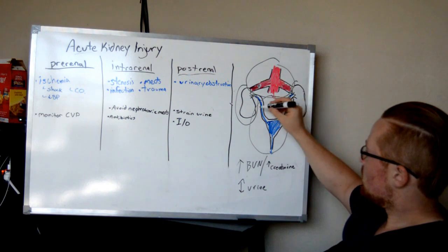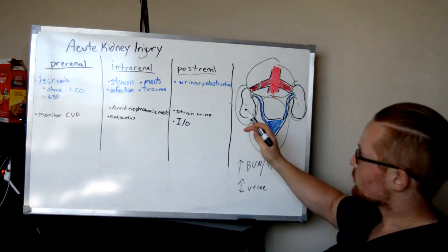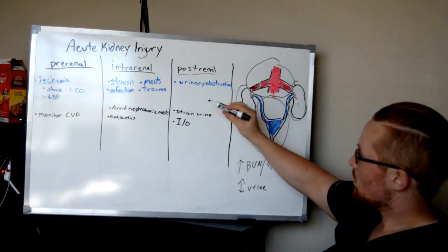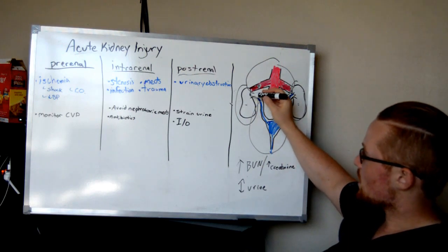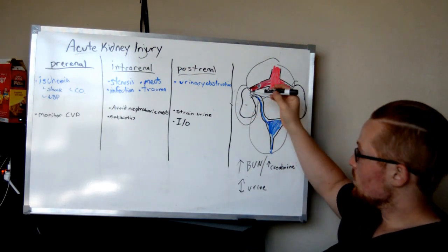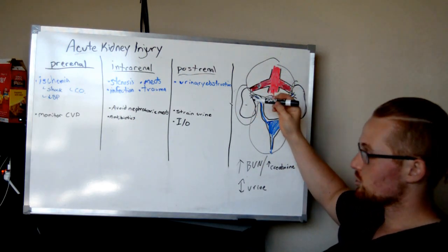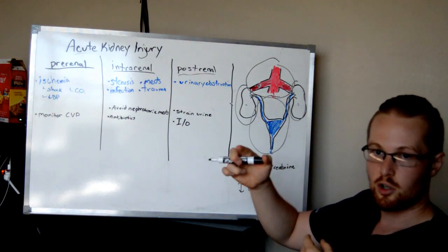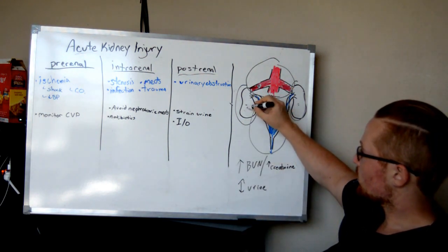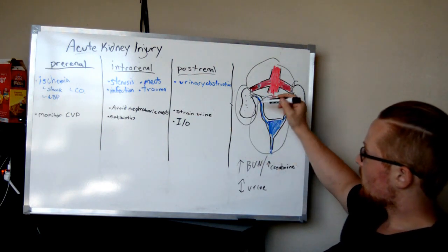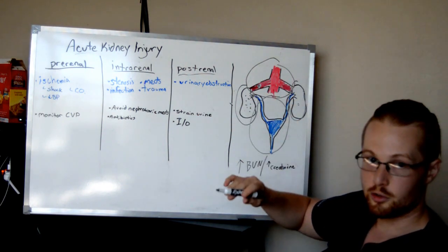Intrarenal has to do with the kidneys themselves. This is where you see the injury. Whether something traumatic happened directly to the kidney. Or if you have medications that are toxic to the kidney. And there are high levels in the blood such as vancomycin or gentamicin. That's why you have to do the peaks and troughs. If those levels are too high, it will damage the kidney itself. Or infection that is in the kidney, such as glomerulonephritis.